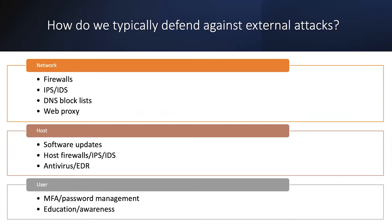If we take a step back before we start looking at websites, one of the questions we asked ourselves is: how do we typically defend against external attacks? We typically start with the network — do we have a firewall, an intrusion prevention system, intrusion detection inside the network? We may make use of DNS block lists or web proxy services that help us vet traffic or vet sites that our users are visiting.